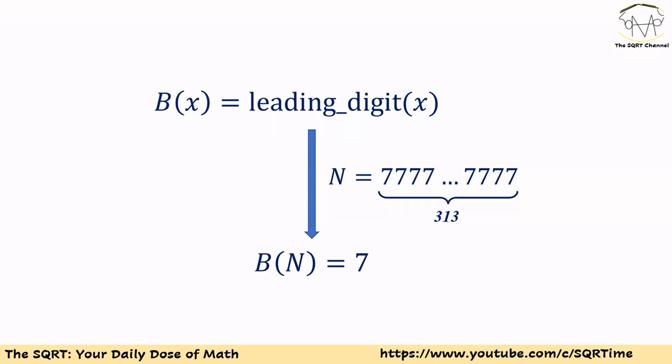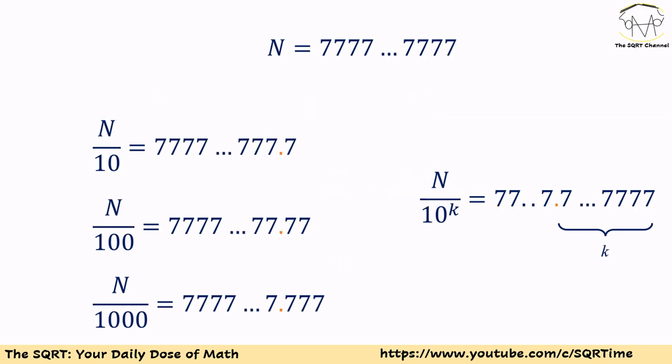For example, when we have N as represented here, b(N) is going to be seven. Now, N is a big number — it has 313 digits. If we divide N by 10, or 100, or 1000, you are going to see that the leading digit of N over 10, N over 100, or N over 1000 is going to be the same.